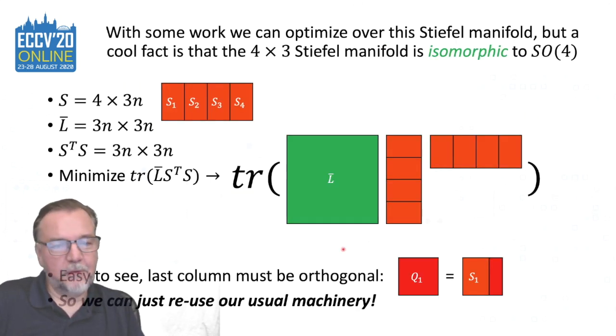We can actually optimize on Stiefel manifolds, and we have an implementation of that, but a beautiful fact is that four-by-three Stiefel manifolds are isomorphic to the space of rotations in fourth space, i.e. SO4. And to see that, it's easy to see, actually. If you have three orthonormal columns, well, then the fourth one in SO4 is completely determined by the other three. So Stiefel and SO4, in this case, are the same space. So that means that we can take the machinery that we built for SO3 and local parameterization, skew-symmetric matrices, exponential maps, et cetera, and we can just use that and optimize over SO4. It's the same space as the Stiefel space.